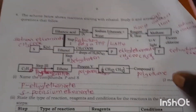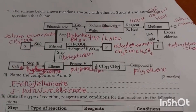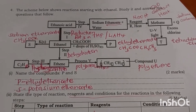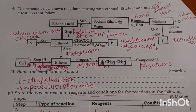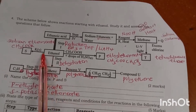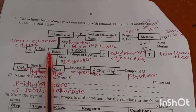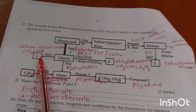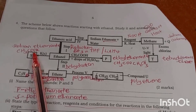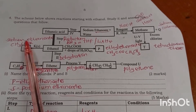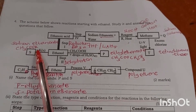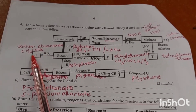Question five: study the scheme starting with ethanol and answer the questions. When you react ethanol with potassium it gives potassium ethanoate.